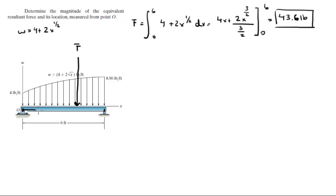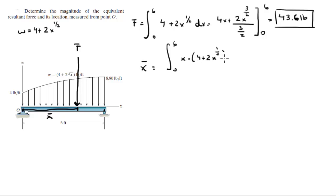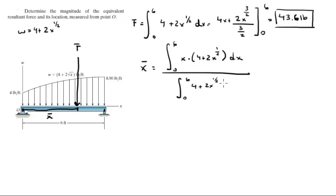Now you need to find this distance from O, which is called x-bar. X-bar is given by the integral from 0 to 6 of x times W — that is x times (4 plus 2x to the 1/2) dx — all over the integral of 4 plus 2x to the 1/2 from 0 to 6 dx. The bottom we already found as 43.6, so there's no need to calculate it again.